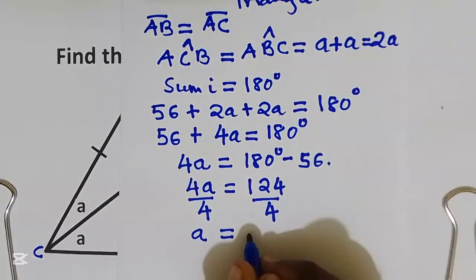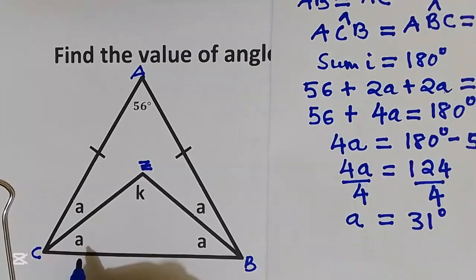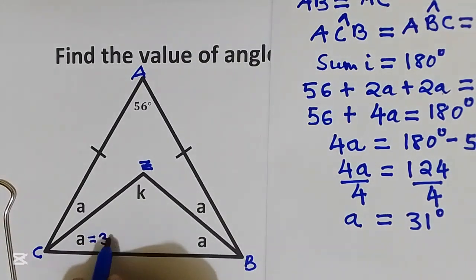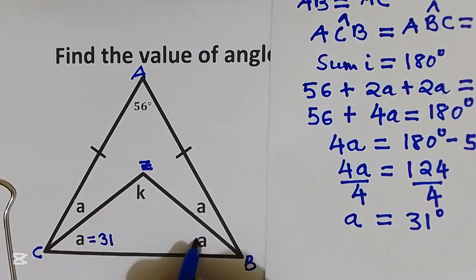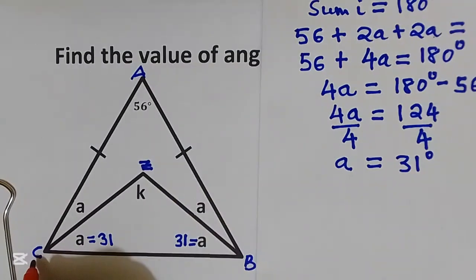Already we get the value of a is equal to 31 degrees. This a here is equal to 31. We are going to use triangle CZB to find the value of k.